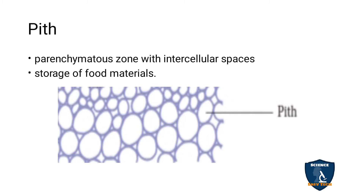The pith is located at the center of the stem, made up of parenchyma cells with intercellular spaces — meaning there are gaps between the cells called intercellular spaces. The function of the pith is storage of food materials.